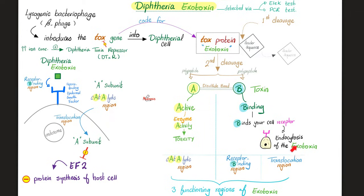What is the name of your cell receptor? Heparin binding epidermal growth factor. Just as the A subunit contains the catalytic region, the B subunit contains other regions: the receptor binding region and the translocation region. The translocation region helps the catalytic region enter your cell. The receptor binding region binds your cell receptor first. So diphtheria exotoxin binds your heparin binding epidermal growth factor receptor; the translocation region then binds your endosome and facilitates entry of the catalytic region, which inhibits elongation factor 2, stopping protein synthesis. Now you're toast.